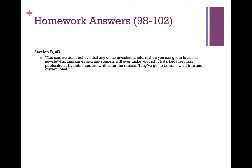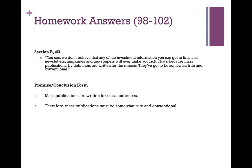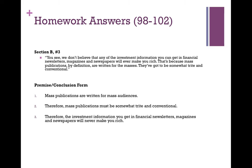Number three: we don't believe that any of the investment information you can get in financial newsletters, magazines, and newspapers will ever make you rich. That's because mass publications, by definition, are written for the masses — they've got to be somewhat trite and conventional. In premise-conclusion form: mass publications are written for mass audiences. Therefore, mass publications must be somewhat trite and conventional. Therefore, investment information you get in financial newsletters, magazines, and newspapers will never make you rich.